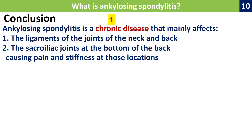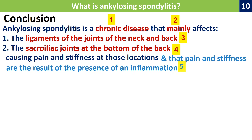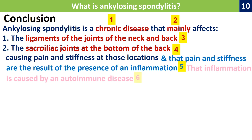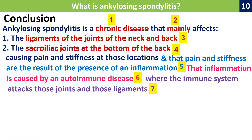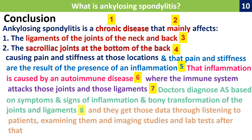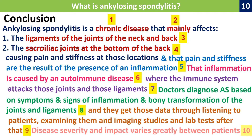Conclusions of this lecture: ankylosing spondylitis is a chronic disease that mainly affects the ligaments of the joints of the neck and back and the sacroiliac joints at the bottom of the back. It causes pain and stiffness caused by inflammation, which is caused by an autoimmune disease where the immune system attacks those joints and ligaments. Doctors diagnose it based on symptoms and signs of inflammation or bony transformation, gathered through history, examination, imaging studies, and lab tests. Disease severity and impact varies greatly between patients. Thank you for listening.